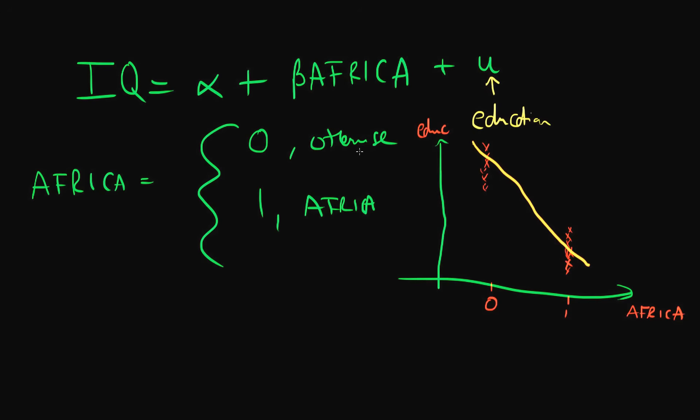The problem is if we estimate this specification by least squares, our estimate of beta would more likely than not be biased. And in what direction would it be biased? It would likely overstate the effect of being from Africa.